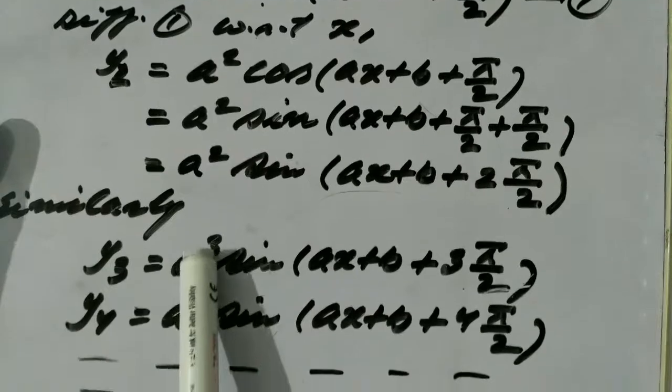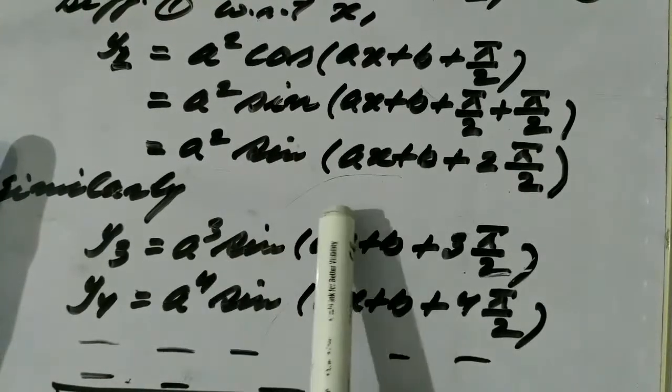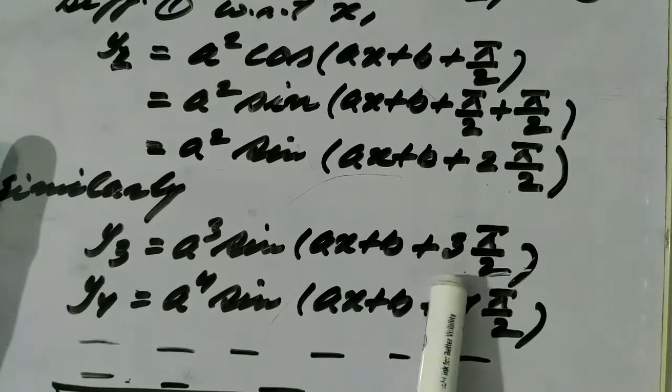In the third derivative, a squared becomes a cubed and sin(ax+b+2π/2) becomes ax+b+3π/2.